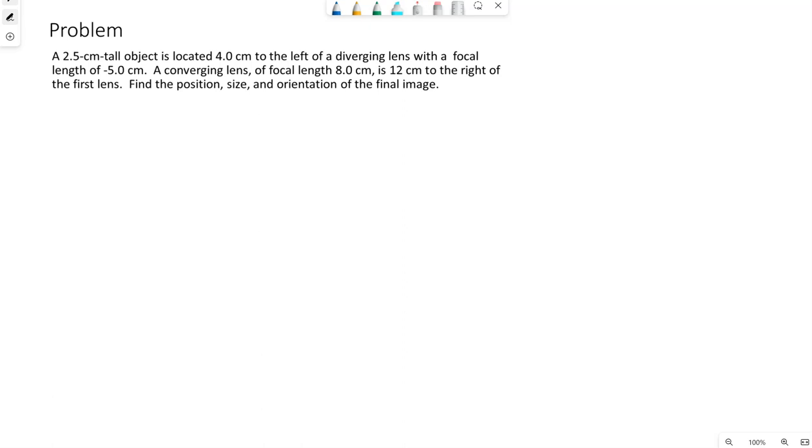We have an example problem here. A 2.5 centimeter tall object is located 4 centimeters to the left of a diverging lens with a focal length of negative 5 centimeters.